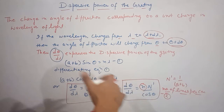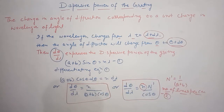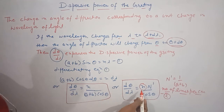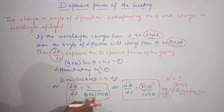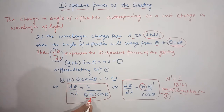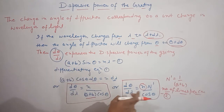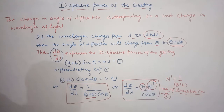If the order is more, the dispersive power of the grating will be more — it is directly proportional to the order of the spectrum. The second point is that the dispersive power increases with the decrease in the grating element (a + b), or equivalently, increases with the increase in the number of lines on the grating.